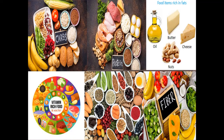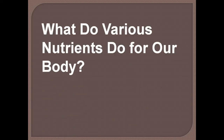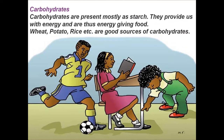Carbohydrates, proteins, fat, vitamin, mineral, fiber or roughage and water are the important nutrients or components of food. Carbohydrates are mostly present as starch. They provide us with energy and are thus energy-giving food. Wheat, potato, rice etc. are good sources of carbohydrates.